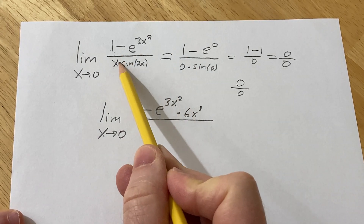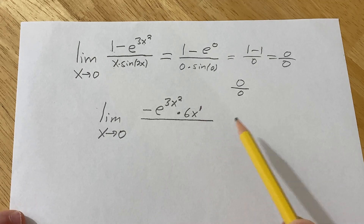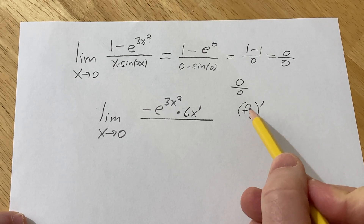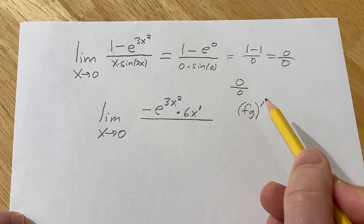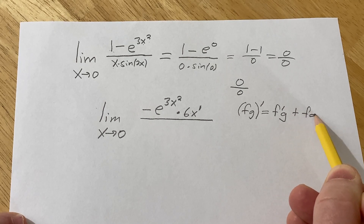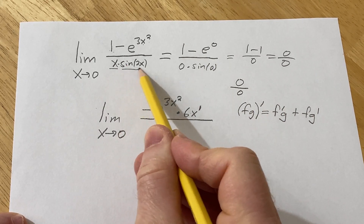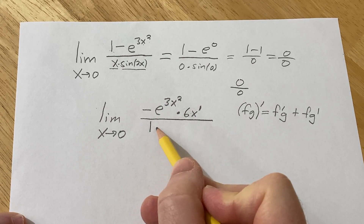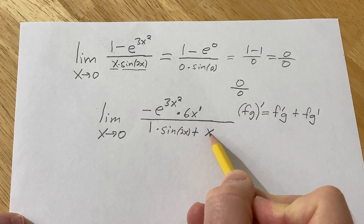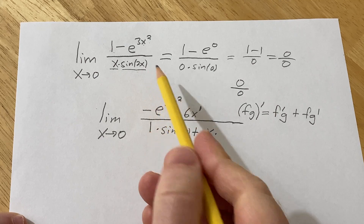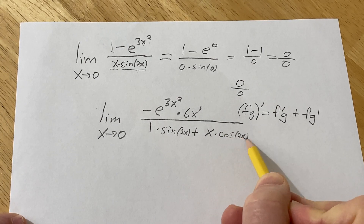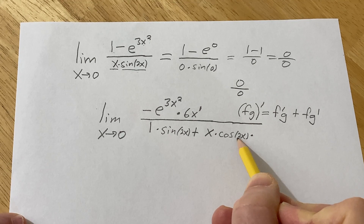In the denominator we have a product: x times the sine of 2x. The product rule says it's the derivative of the first times the second, plus the first times the derivative of the second. The derivative of x is 1, so we get sine 2x, plus x times the derivative of sine of 2x. That requires the chain rule: the derivative of the outside is cosine 2x, leave the inside untouched, times the derivative of the inside which is 2.